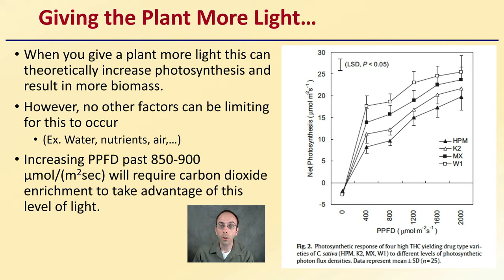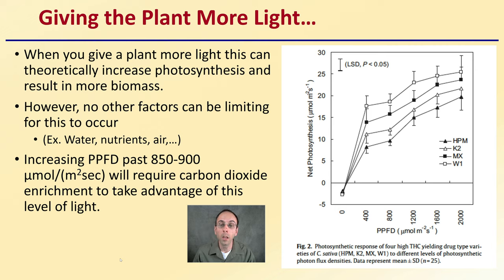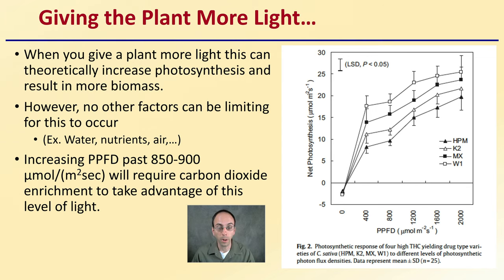We want to have a good root structure and we don't want to have any disease — there are other little factors to consider. But when we start to get above that 850 to 900, if you're not supplementing with carbon dioxide, you're not going to allow those plants to take full advantage of that additional light intensity you're providing for them.